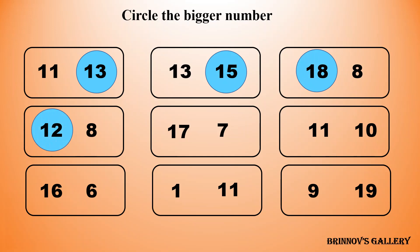17 and 7 — 17 is bigger than 7. 11 and 10 — 11 is bigger than 10. 16 and 6 — 16 is bigger than 6. 11 and 11 — 11 is bigger than 1. 9 and 19 — 19 is bigger than 9.